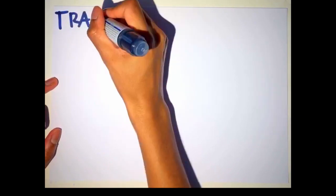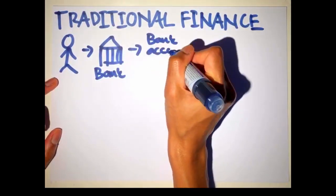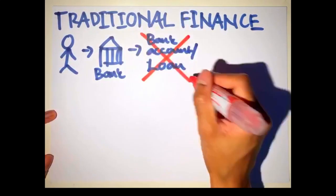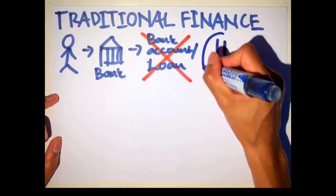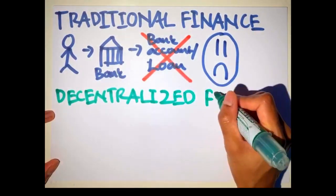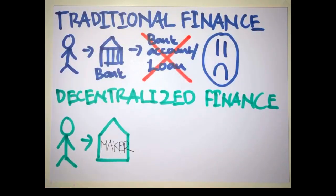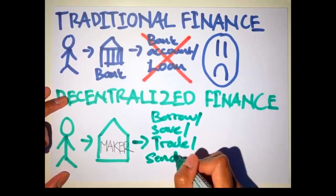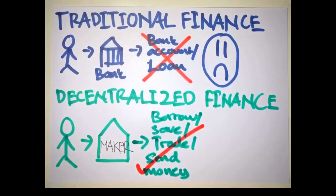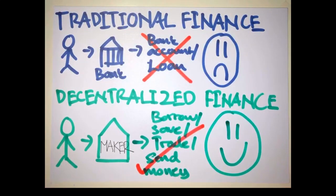So to sum it up, currently in our financial system, many people are not eligible to open a bank account or small businesses often don't qualify for loans as banks maintain a certain threshold to approve loans. With decentralized finance, specifically MakerDAO, everyone has equal opportunity to borrow, save, trade or send money using DAI. There is no approval or permission needed from any authority for you to use DAI.